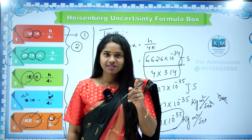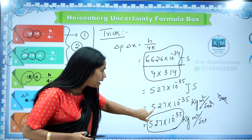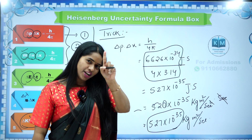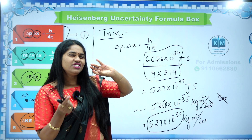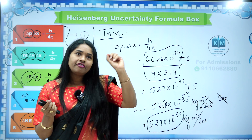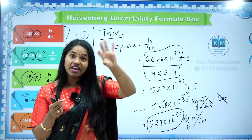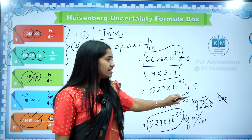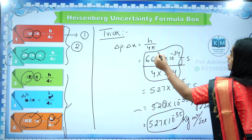This is the value you have to keep in your mind: h by 4 pi equals 5.27 into 10 to the power of minus 35. Even this is a little difficult to remember, so here is a small mnemonic: 5 plus 2 is 7, so you get 5.27. And for the power, 3 plus 5 is 8, so you remember 35 — giving you 10 to the power of minus 35. The sequence 5, 7, 8 helps you remember. This is your h by 4 pi value.